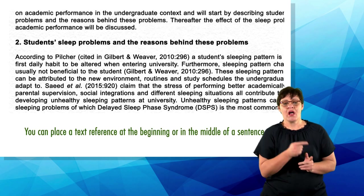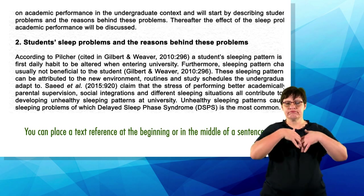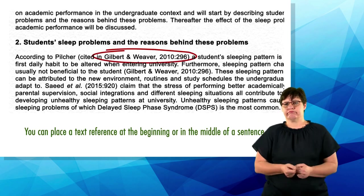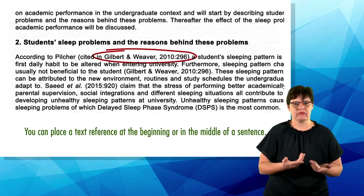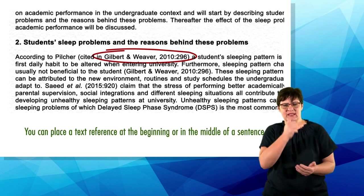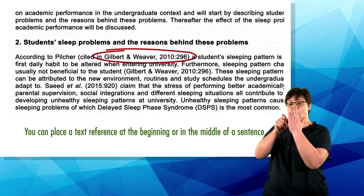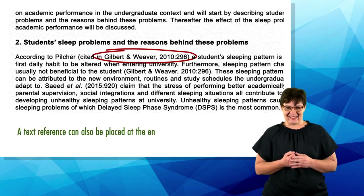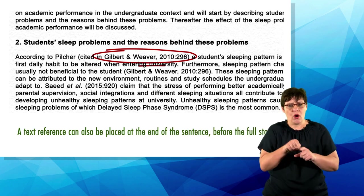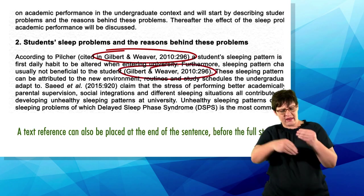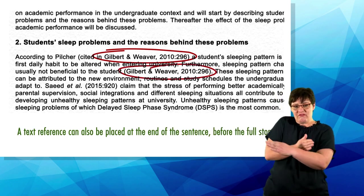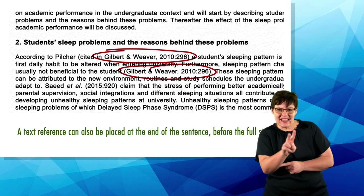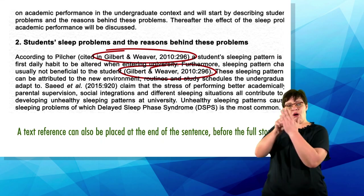You can place a text reference at the beginning or in the middle of a sentence. In these cases, the author's surname usually forms part of the sentence. A text reference can also be placed at the end of the sentence, before the full stop. In this case, the author's surname falls within the brackets.